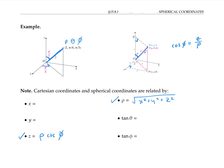Moving on to x and y: x and y are the legs of a right triangle whose hypotenuse is the line segment labeled r in the diagram. In terms of the angle theta, x is the adjacent side, so cosine of theta equals x over r. And since y is the opposite side to theta, sine of theta equals y over r. So that gives x equals r cosine theta, and y equals r sine theta. But r is not one of our three spherical coordinates — the spherical coordinates are rho, theta, and phi — so we need to rewrite r in terms of rho, theta, and phi.